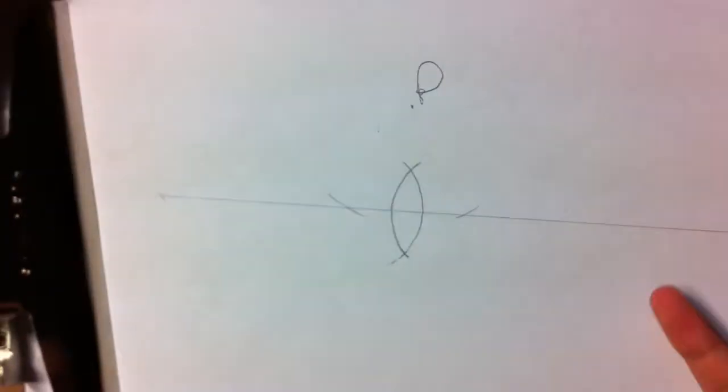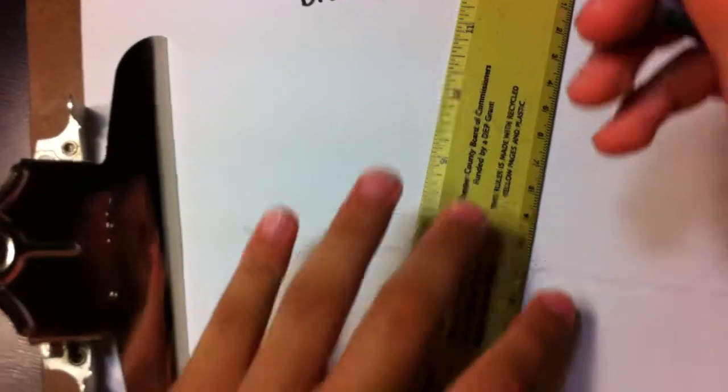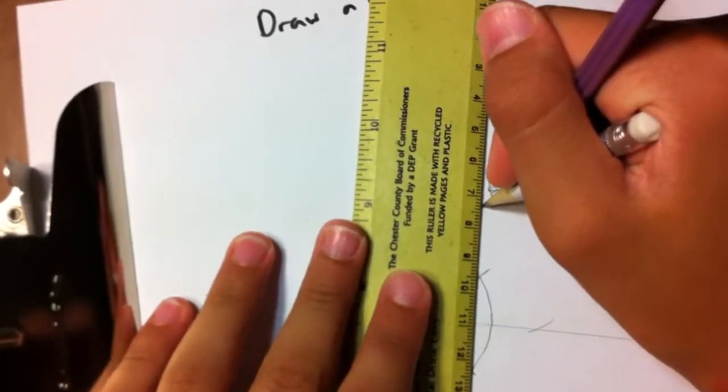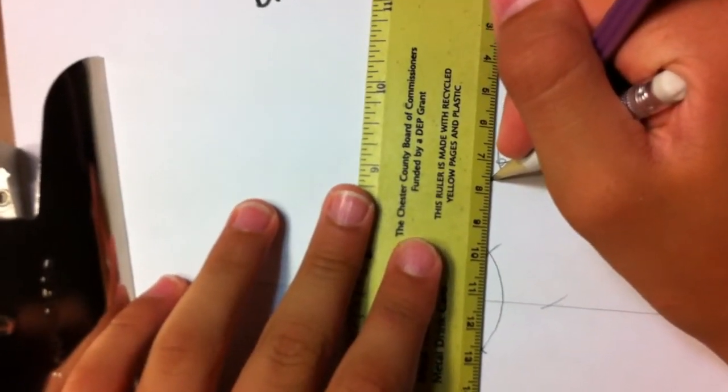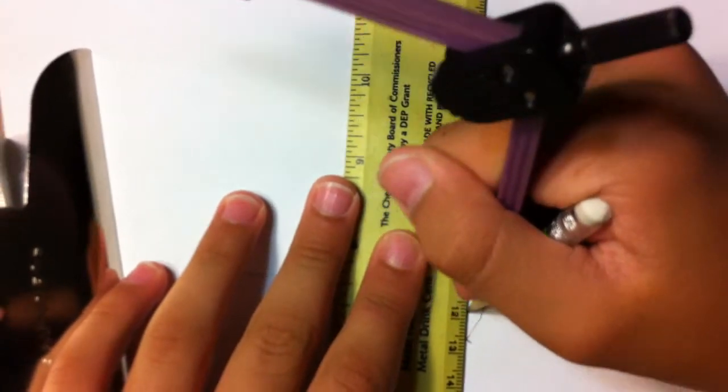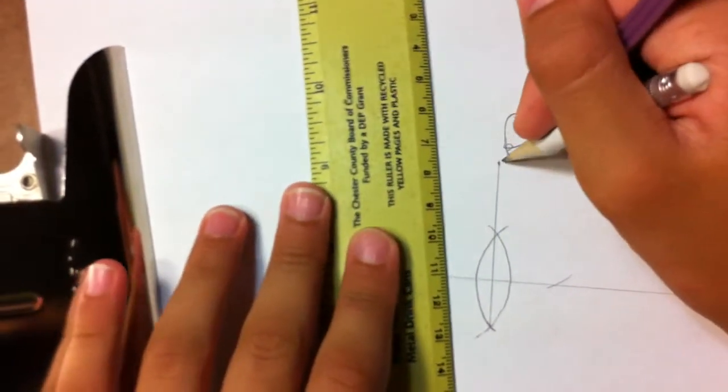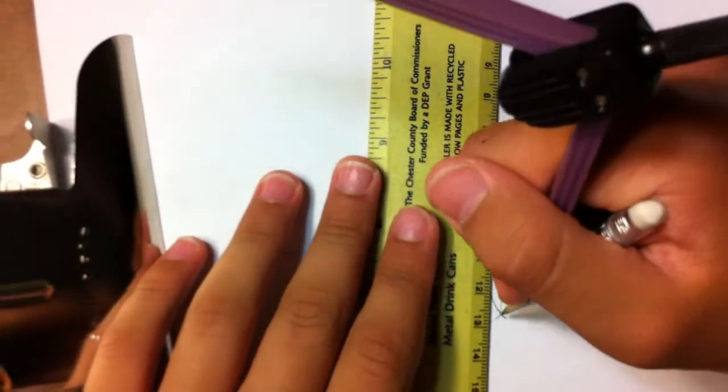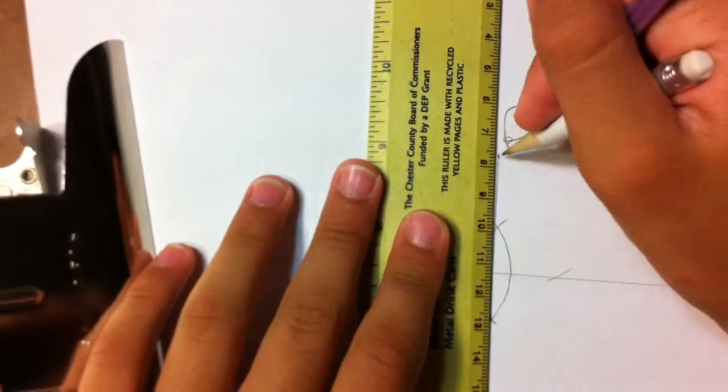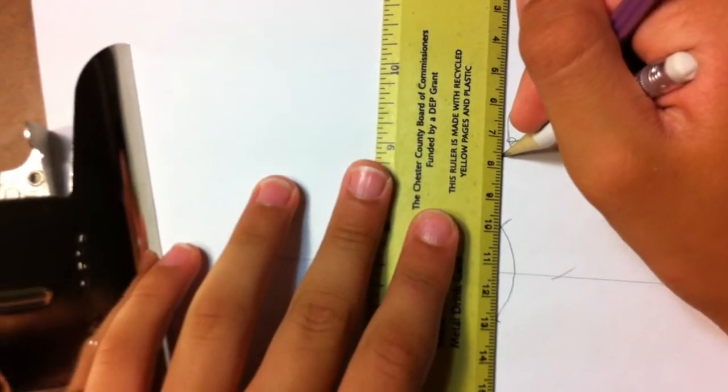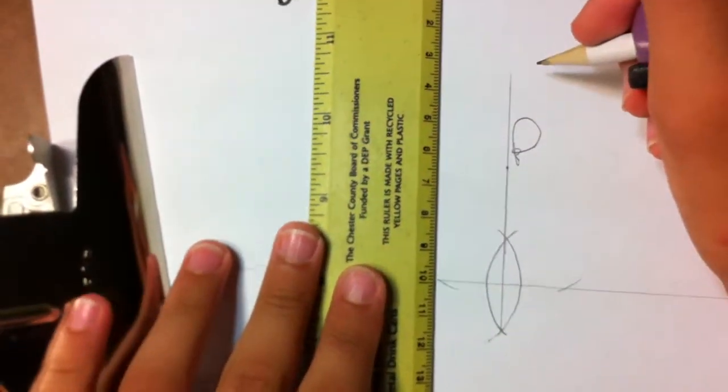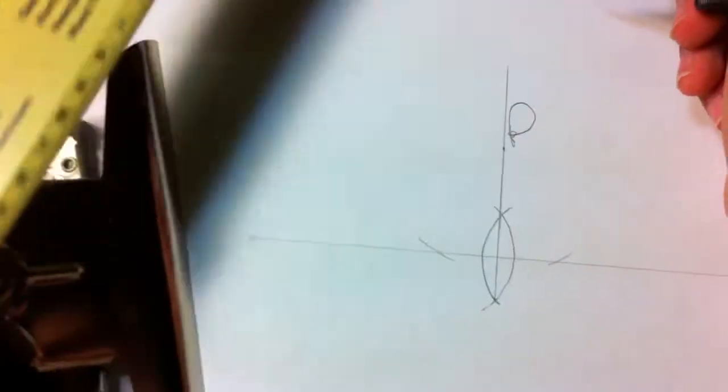And now you have your perpendicular line through P, the point. And actually you don't want to just draw it to point P, you want to extend it past point P. Okay, that looks good.